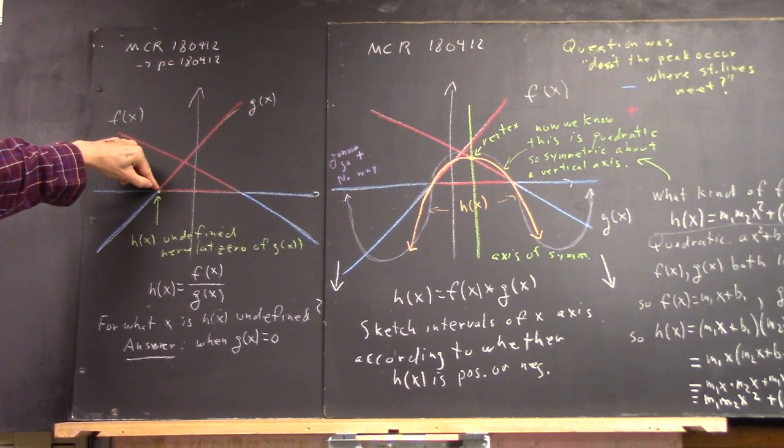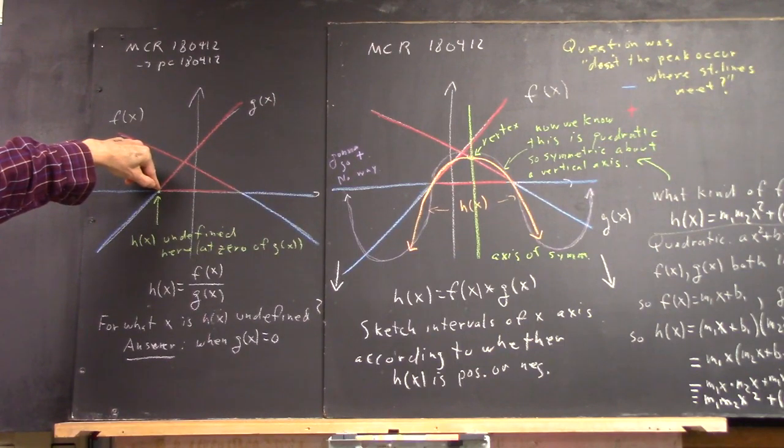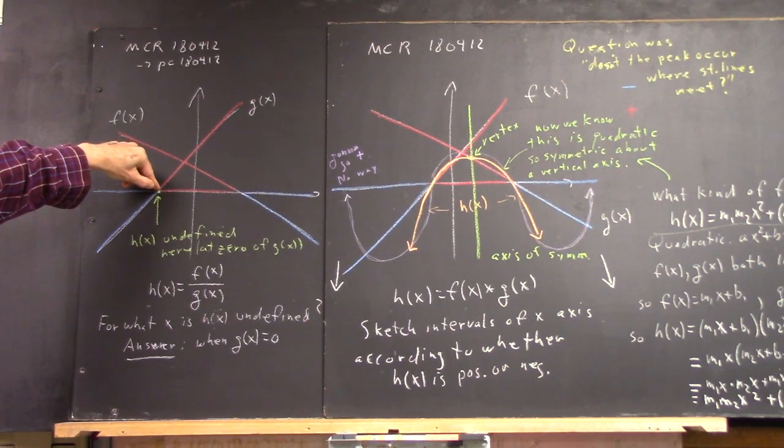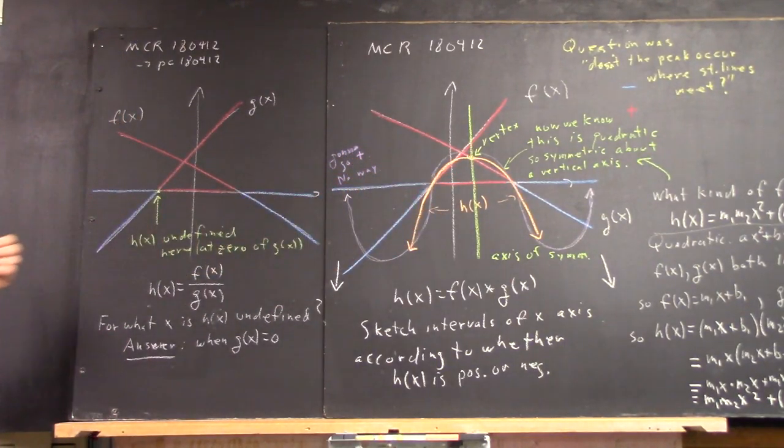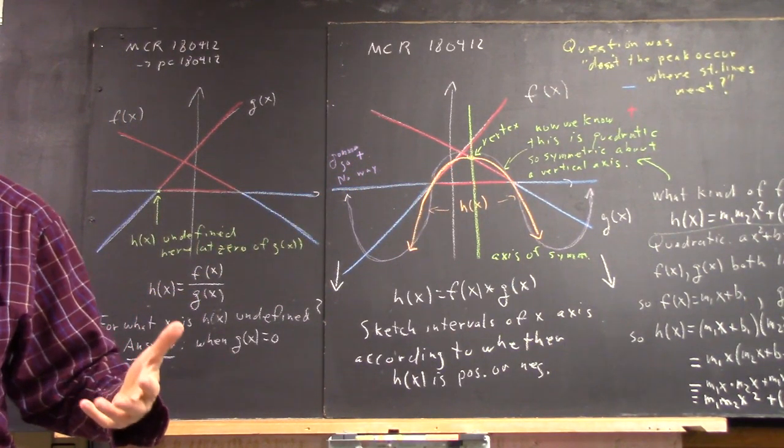Now what happens in the neighborhood of where this point, where this thing is undefined? And what happens if you go far to the right or far to the left? We've got to figure out those two things.